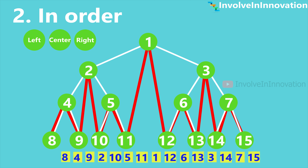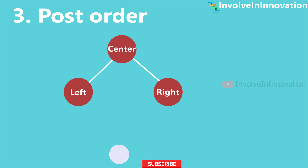We start from the leftmost node in the right subtree which is 12, then parent 6, then right node 13, then parent of 6 which is 3. Then the leftmost node of the right subtree of 3 which is 14, then parent 7, then right node 15. The in-order traversal of this tree is: 8, 4, 9, 2, 10, 5, 11, 1, 12, 6, 13, 3, 14, 7, 15.